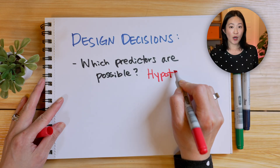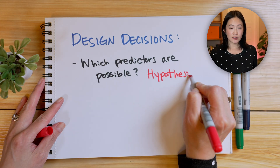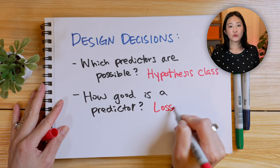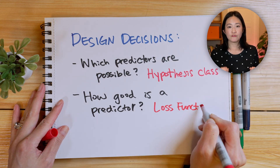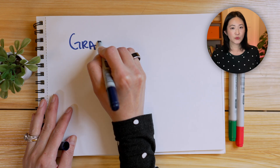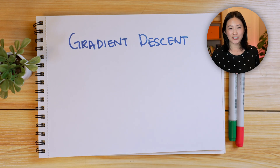Next, we need to measure how good the model is at making predictions. We do this with a loss function, which measures the difference between the model's prediction and the actual data. Finally, we need an algorithm to minimize the loss function and find the best line that fits the data. This is where gradient descent comes in.